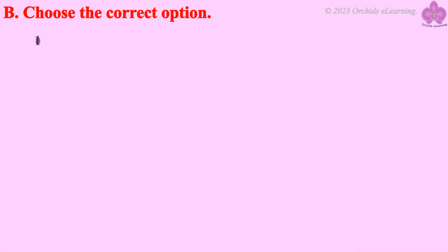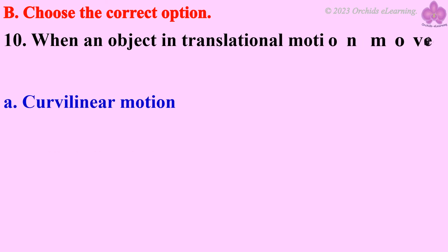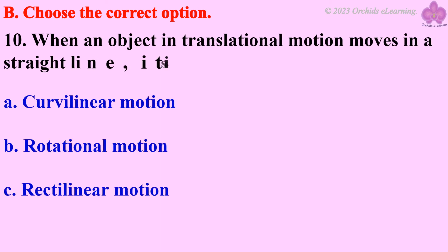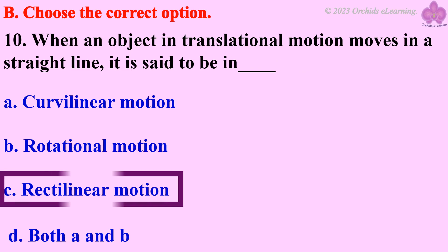When an object in translational motion moves in a straight line, it is said to be in. Answer: C. Rectilinear motion.